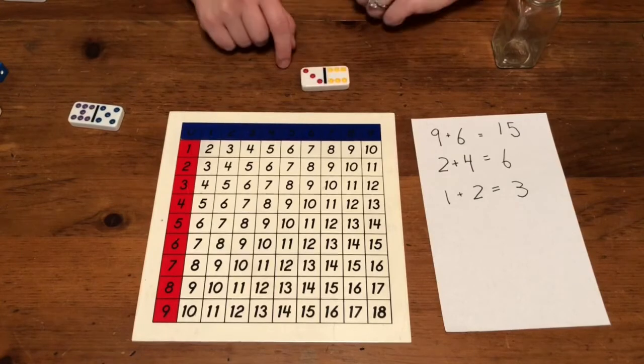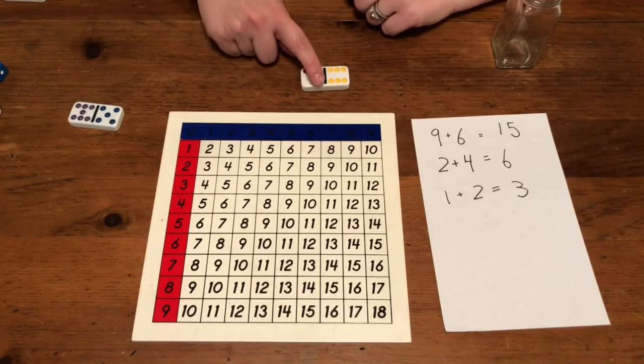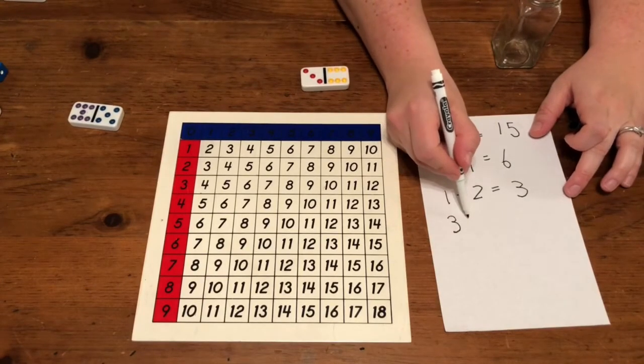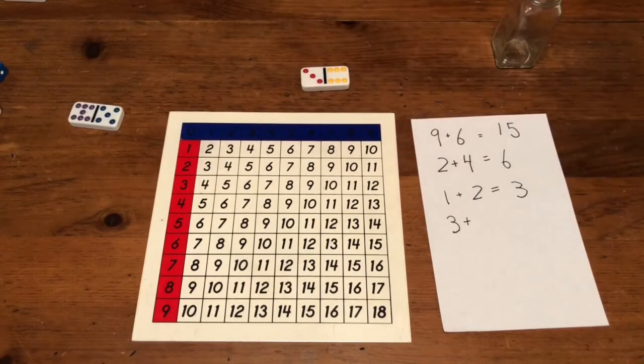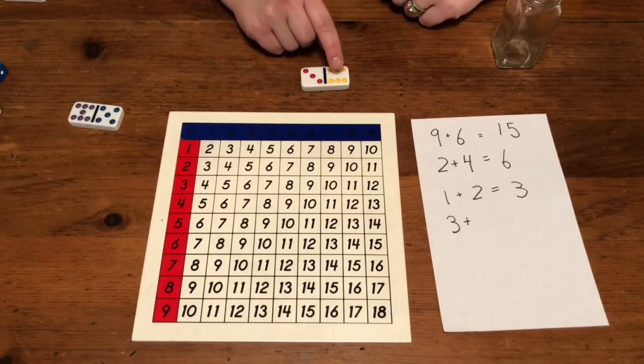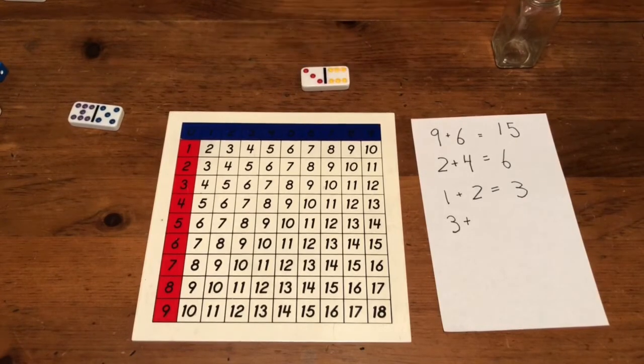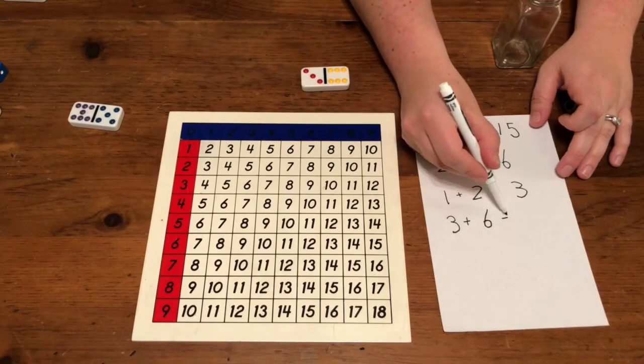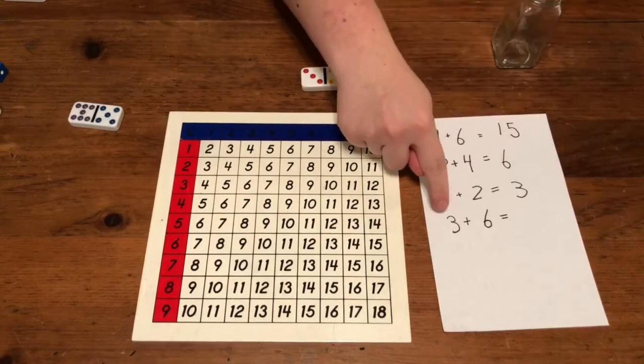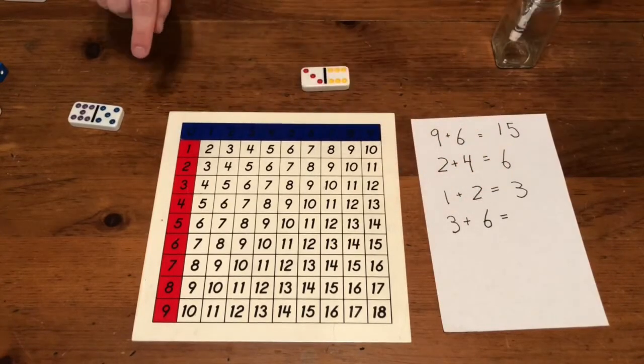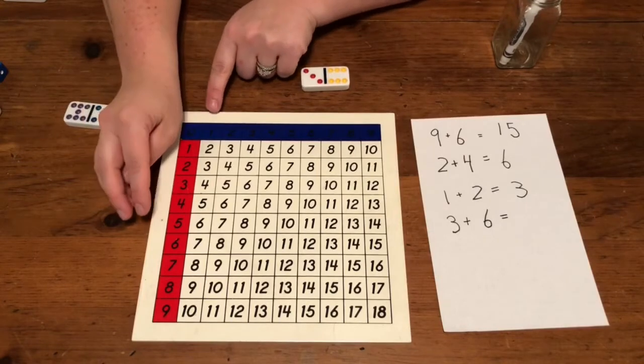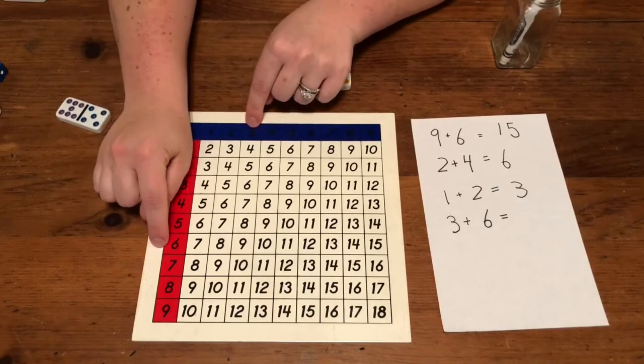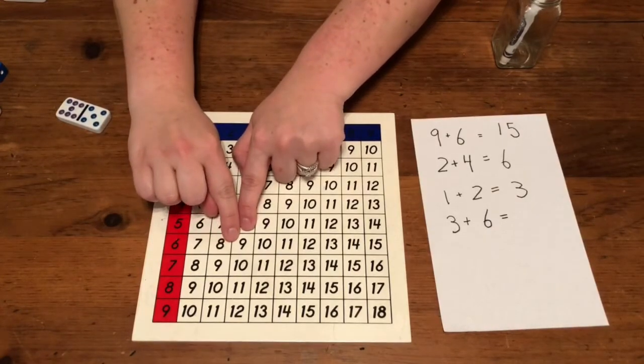Our next domino says one, two, three. The next part of the domino says one, two, three, four, five, six. So I've written my equation: three plus six. Now let's find the answer. Our first number is three, our second number is six. Let's find the answer. Nine.